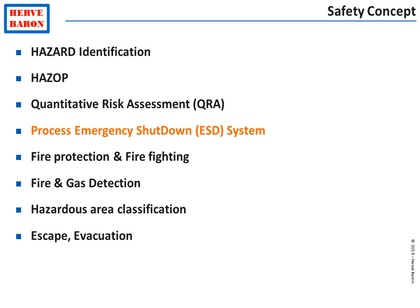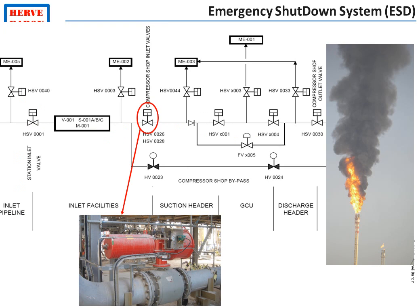The safety of the plant also includes the possibility to shut down the process in an emergency, as well as to isolate and depressurize the various plant sections. Emergency isolation and depressurization valves are therefore provided throughout the plant to segregate the various plant sections and allow their depressurization in case of an emergency.